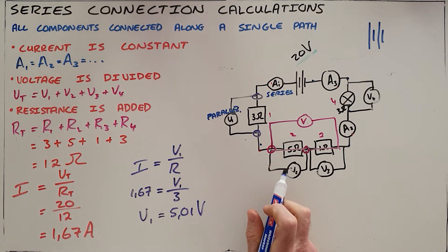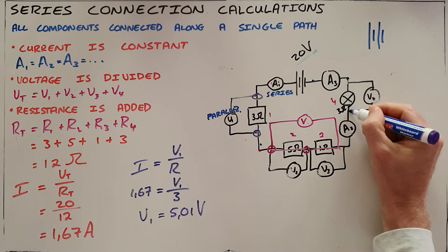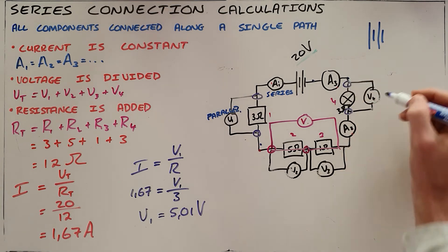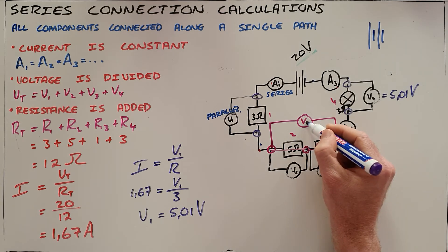We can do this again. The same thing would apply for this here. We can see that the current is the same, the resistance is the same, and therefore the voltmeter reading on V4 would also be 5.01 volts.